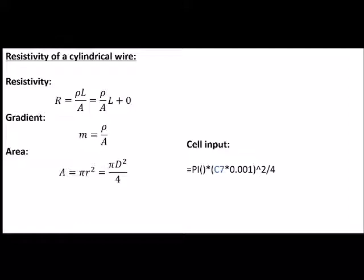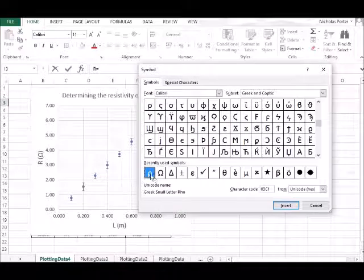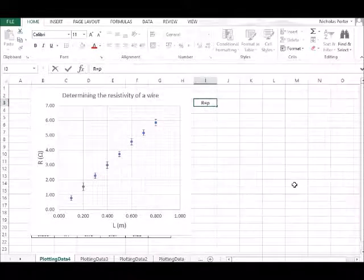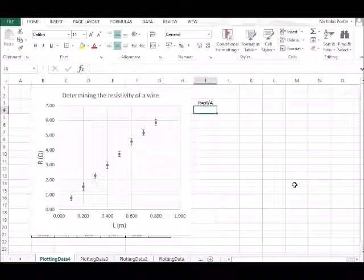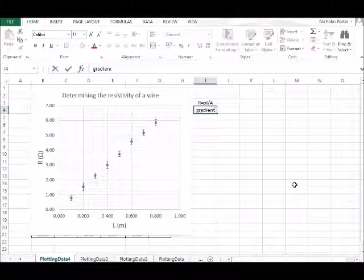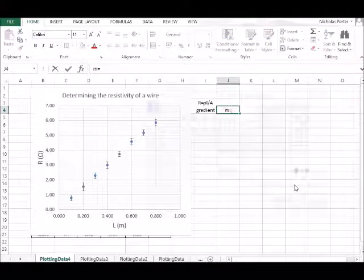Now in our previous video we determined the area with an uncertainty, so if we can obtain a gradient from our graph we can obtain the value of the resistivity, because we have all the ingredients to do the calculation. So I use the symbol m, little m here for gradient, not to confuse with mass, as sometimes it can be done.